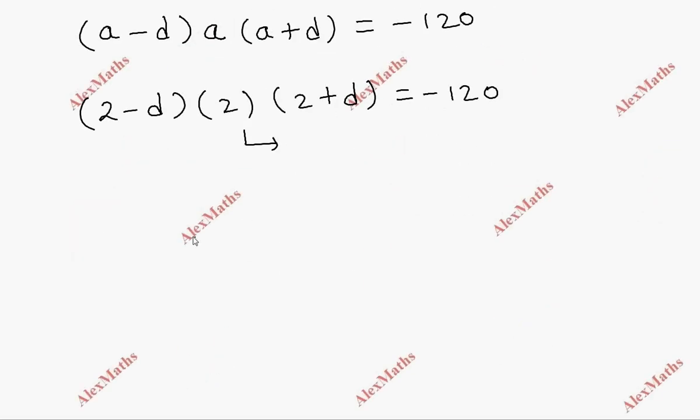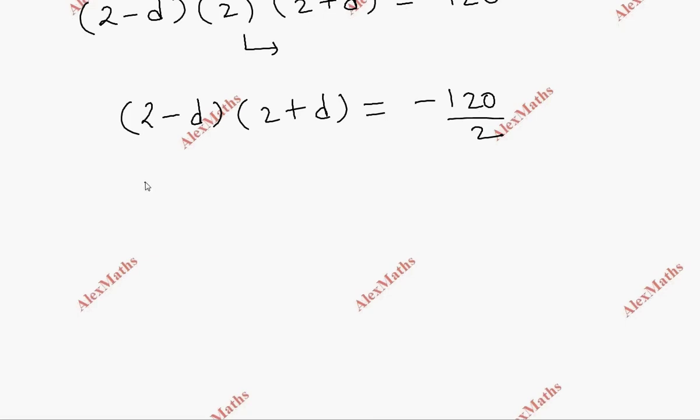Moving the 2 to the other side by division, we get (2-d) times (2+d) equals -120 divided by 2. Using the a+b times a-b formula, we get a squared minus b squared.